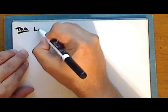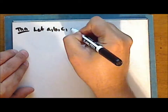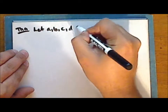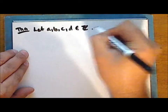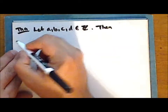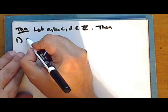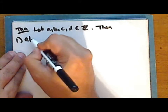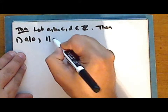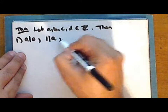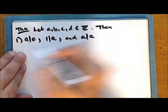We will end lecture two with some more facts about division. So let a, b, c, and d be integers. Then: one, a divides zero, one divides a, and a divides itself.